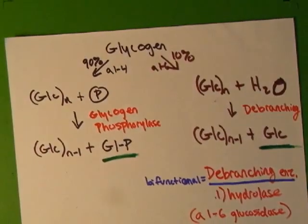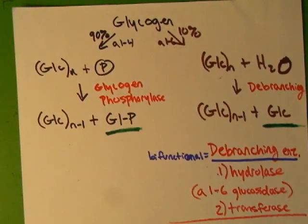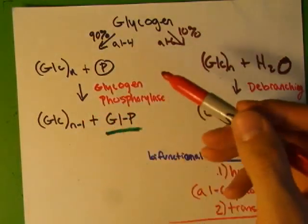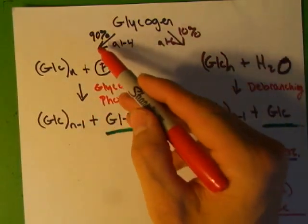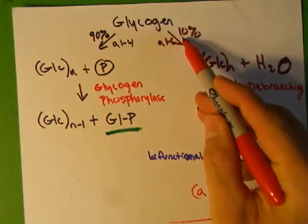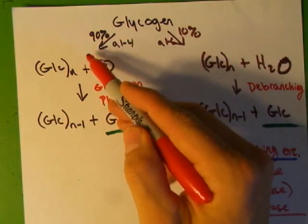The first thing we're going to talk about is degradation. Both liver and muscles start out degrading glycogen in the same way, and then they each handle it a little bit differently from there.